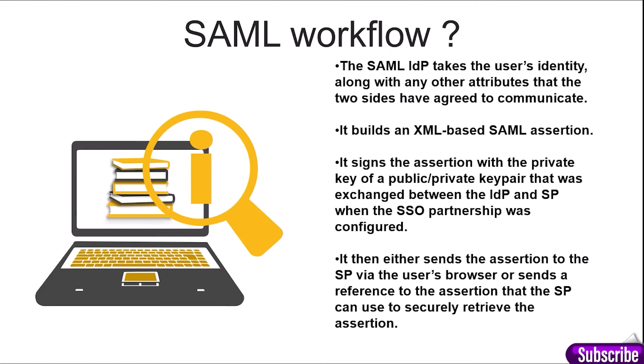Now we will go through the SAML workflow. The SAML IDP takes the user identity along with any other attributes that the two sites have agreed to communicate. It builds an XML-based SAML assertion, then sends the assertion with the private key or public key pair that was exchanged between the service provider and the identity provider when the SSO partnership was configured. It then either sends the assertion to the service provider via the user's browser, or sends a reference to the assertion that the service provider can use to securely retrieve the assertion.